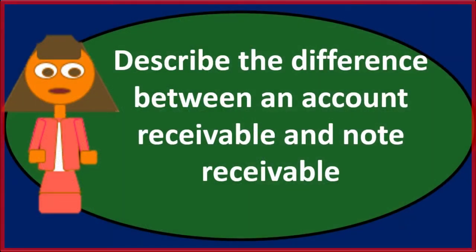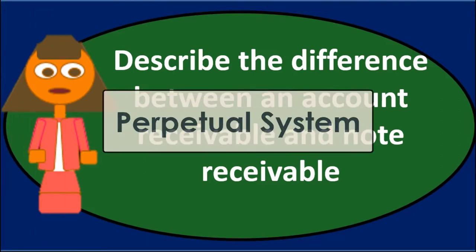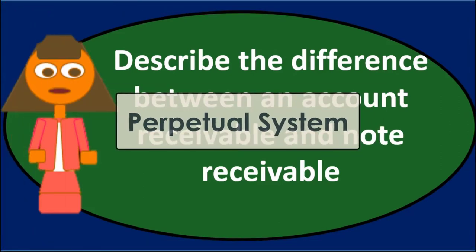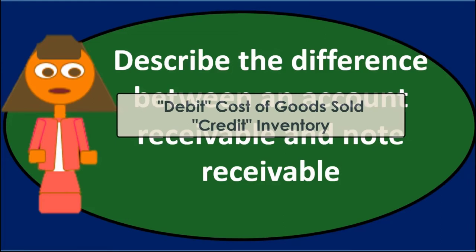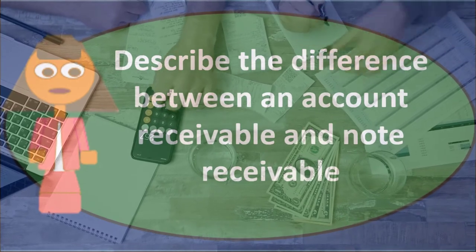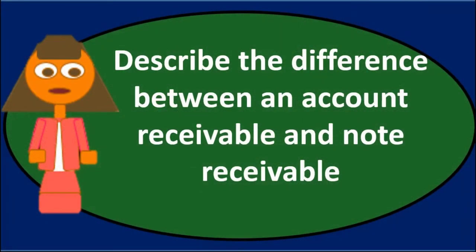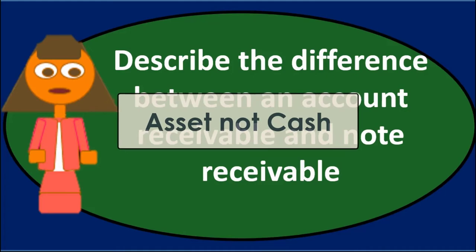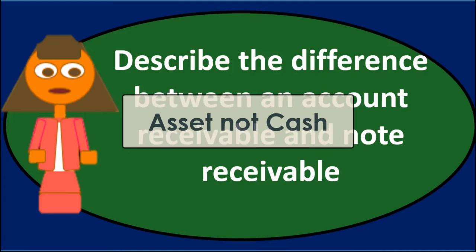If we do sell goods, at the same point in time under a perpetual system we would also typically debit cost of goods sold and credit inventory, which would record the reduction of inventory and the related cost expense of the goods we sold. That's how the accounts receivable gets on the books.